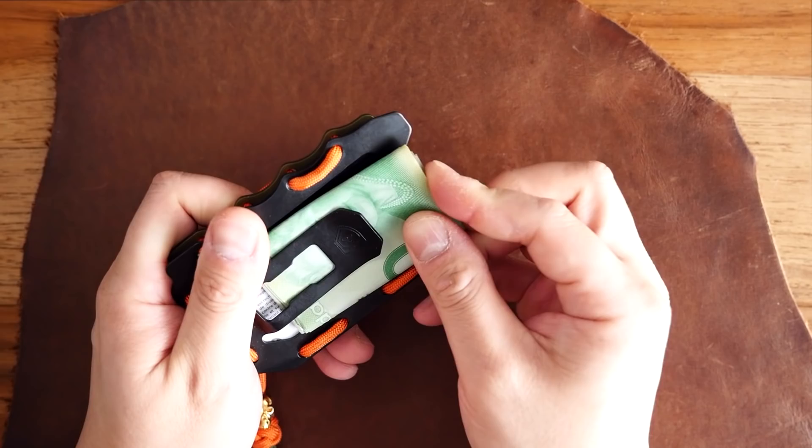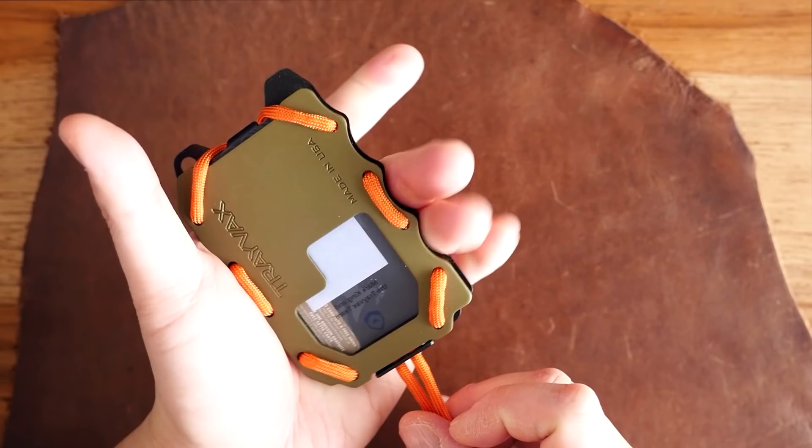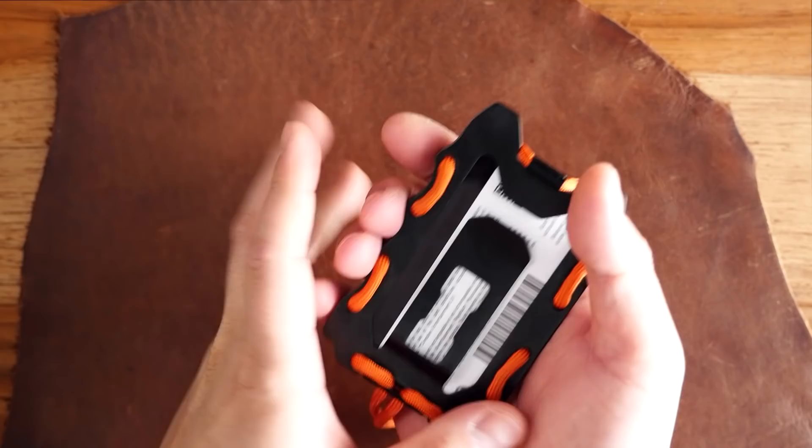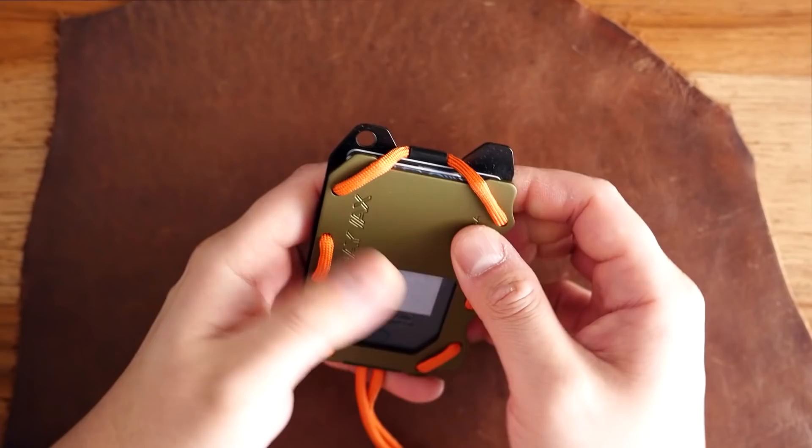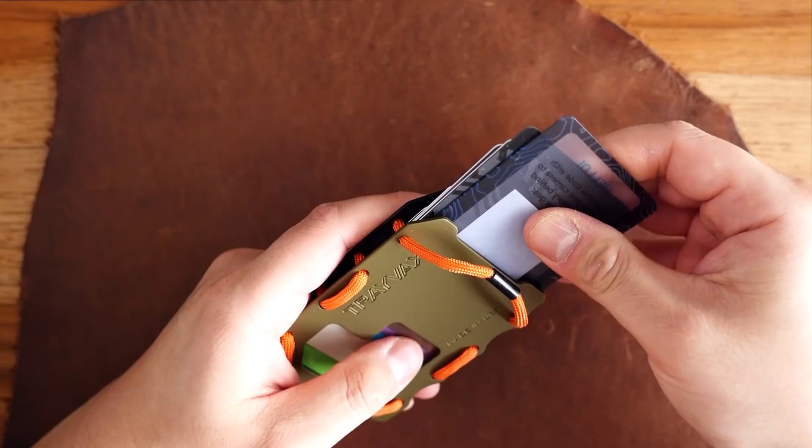The money clip on the back is more than adequate for some folded cash as I normally pay with cards anyhow, so I don't need it to carry too much. The bottle opener on the back works just great and the scallops on the one side of the wallet allow you to get a good purchase while using that bottle opener or just for when you're holding the wallet. The machining on the aircraft grade aluminum plates is very well done and the finishing is excellent as there are no rough edges or unfinished areas.